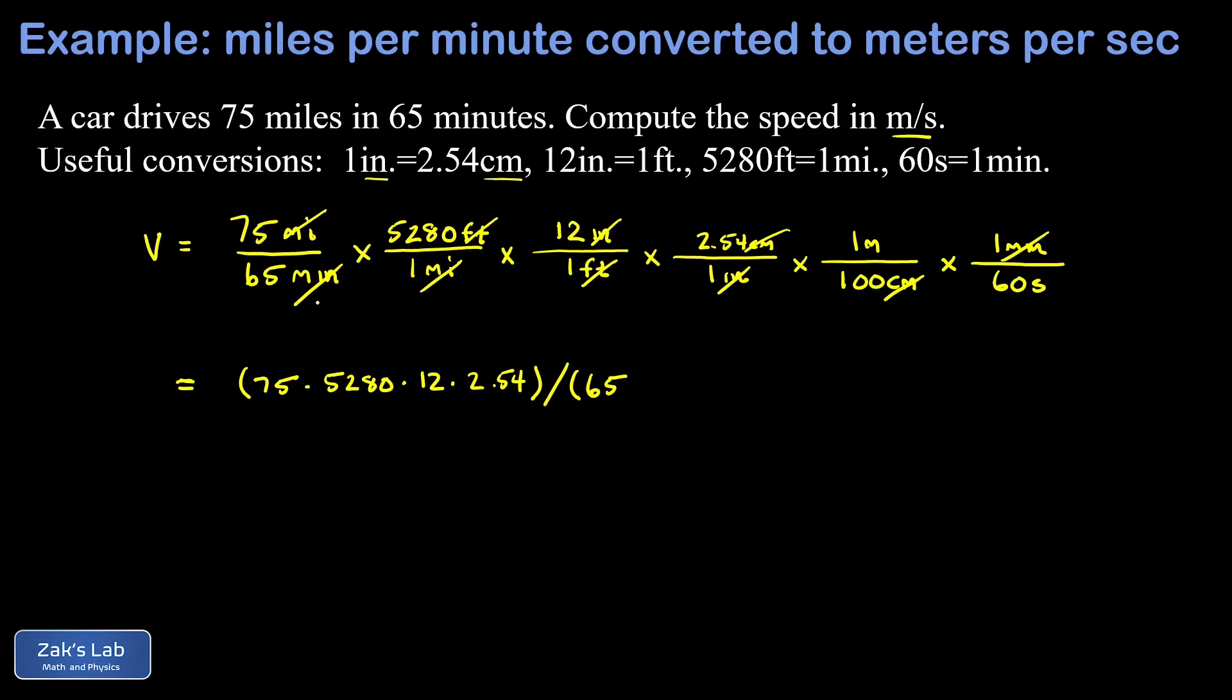Our denominators are 65 and 1 and 1 and 1—I don't have to write those—and 100. So 65 times 100 times 60.